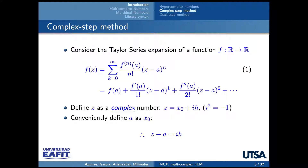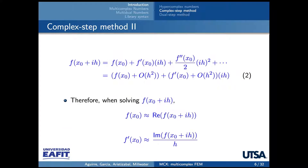The complex step method to compute derivatives consists of doing a Taylor series expansion about our original point x0 in the direction of the imaginary direction. By doing the Taylor series expansion, you obtain your result composed of two terms, one real and one imaginary. If you take the real part of the function evaluated at the perturbed point, you get the value of the function at x0. But if you take the imaginary part, you get the derivative.